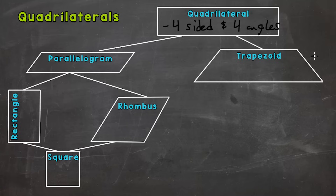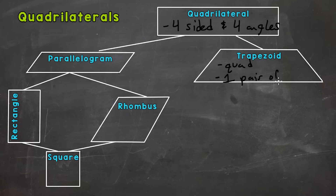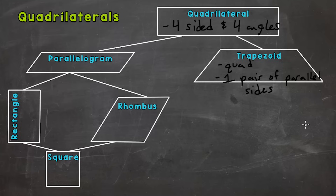As we work our way down the hierarchy, we veer off to the right to trapezoid. A trapezoid is a quadrilateral, but it also has to have exactly one pair of parallel sides. In the trapezoid I'm drawing, the top and the bottom are parallel, but the left and the right are not.